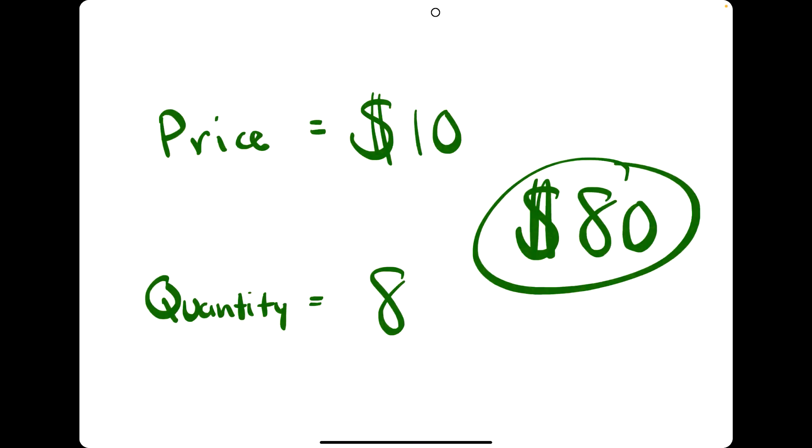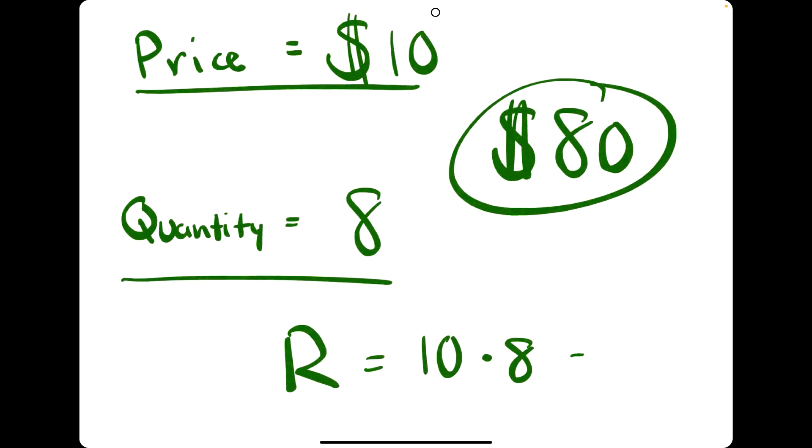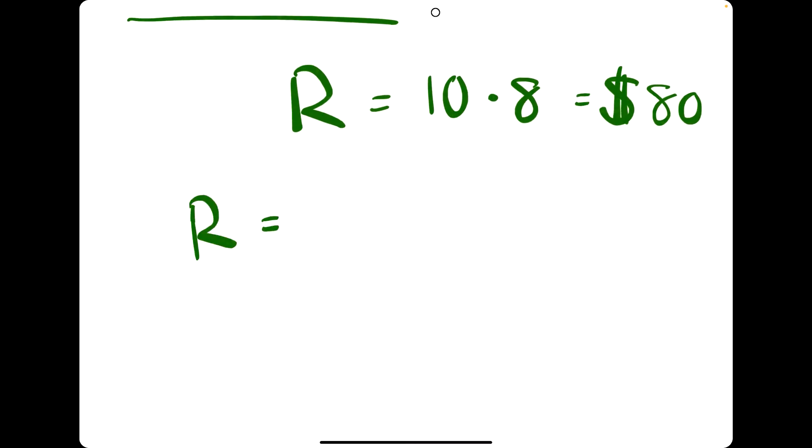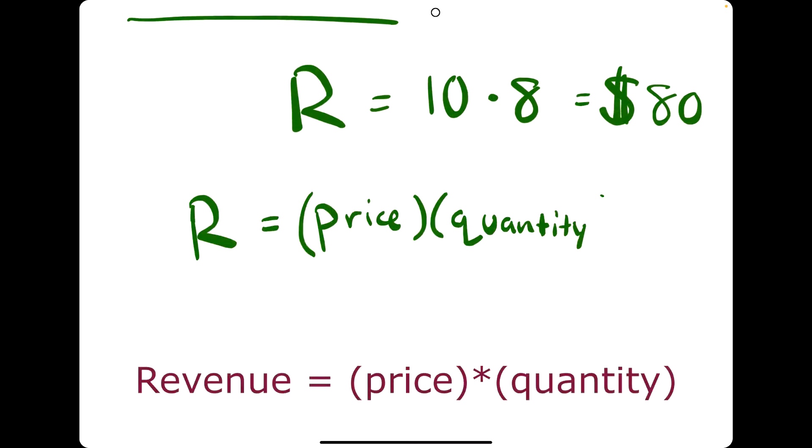That's right, 80 bucks. And how'd you find that? You multiply the price of how much you sold them for by the quantity of how many you sold. This $80 that you brought in is your revenue for that week. In other words, you just derived the revenue formula: price times quantity.